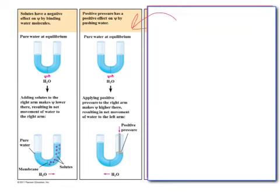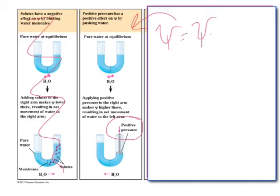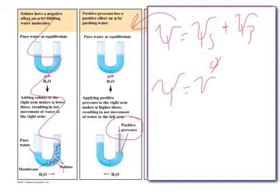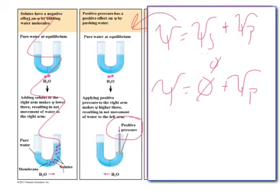Looking at the second scenario, let's look at the effect of pressure. In this scenario, I've added a positive pressure. My solute potential stays at zero — I didn't add any solutes. I've put a mechanical pressure on the right side of the tube — a positive pressure pushing down on the water. I've increased my pressure potential on the right side, making it more positive. Water flows from high to low, so it's going to move to the left side.